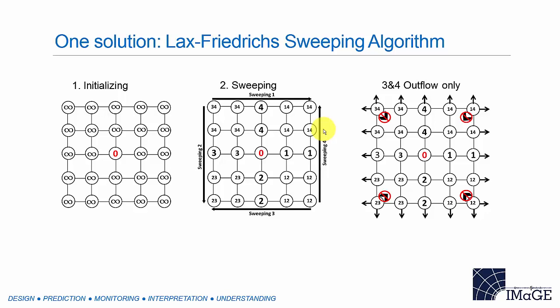The modification I found is the Lax-Friedrich sweeping algorithm. I use three cartoons to demonstrate the workflow. The first step is the same as the original fast sweep method: initialization — at the source location the travel time is set to zero, and at grid points without a travel time yet, we assign a very large number. The second step is to sweep: in 2D we have four directions to sweep, and in 3D we have eight directions. After sweeping, we cover the entire model. At each grid point, we use neighboring travel times to approximate the slowness at the current grid point.